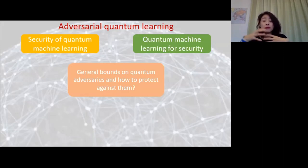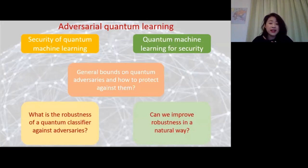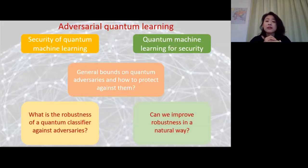Our question is: can we step back and ask whether there are general bounds that we can find for adversarial examples—not just for particular types of algorithms and scenarios? This leads to two basic questions: first, can we say something about the robustness of general quantum classifiers against these types of adversaries? And second, once we know these, are there any ways of improving this robustness in a more general way—techniques which we can readily use without resorting to particular details about the learning models?